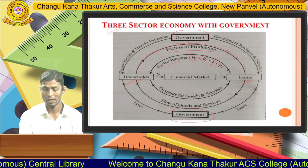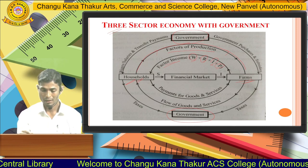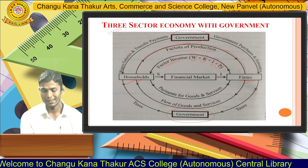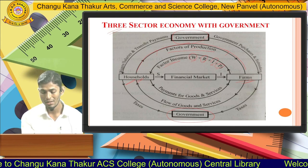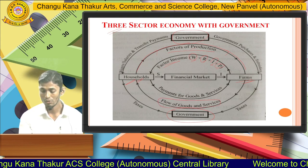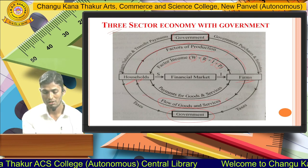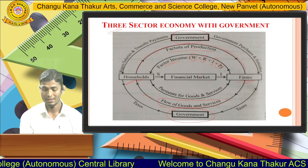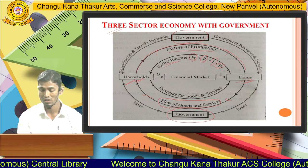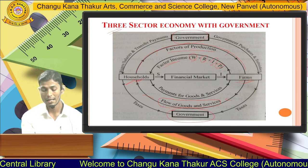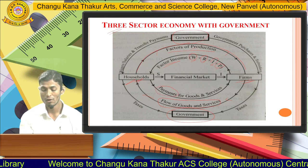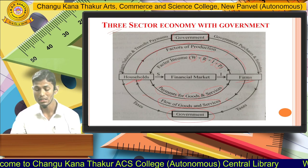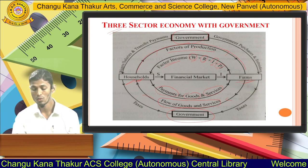Factors of production and factor income together constitute the factor market. In the lower part of the diagram, firms are selling goods and services to households, and households are making payments for whatever goods and services they have purchased from the firms.